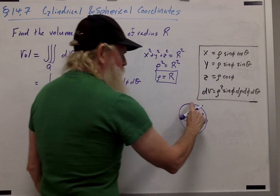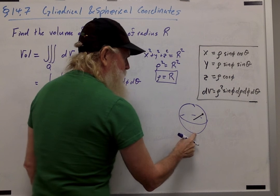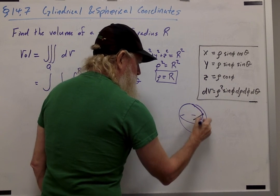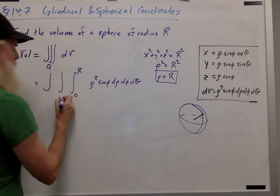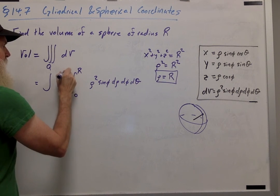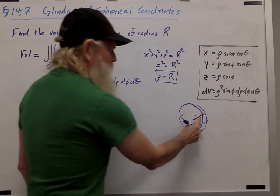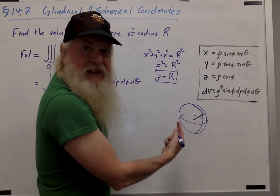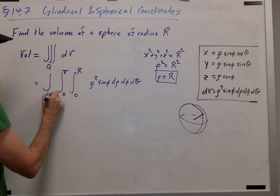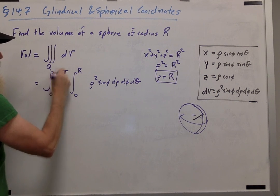My phi, I want to go all the way from the north pole to the south pole. So that's going to be from 0 to pi. And then I would like theta to go all the way around the z-axis. So theta is going to go from 0 to 2 pi.